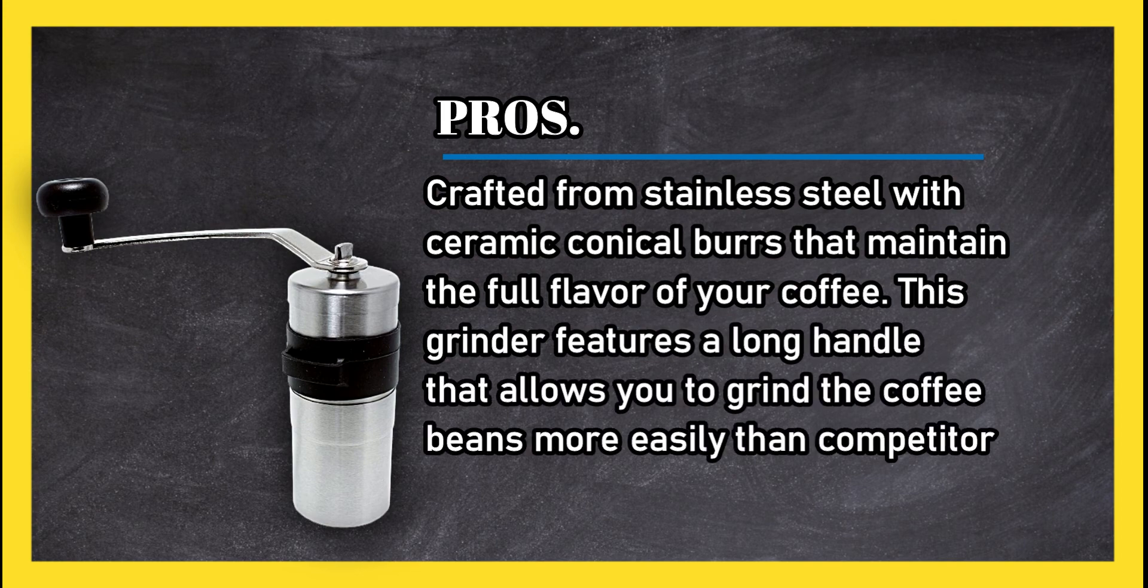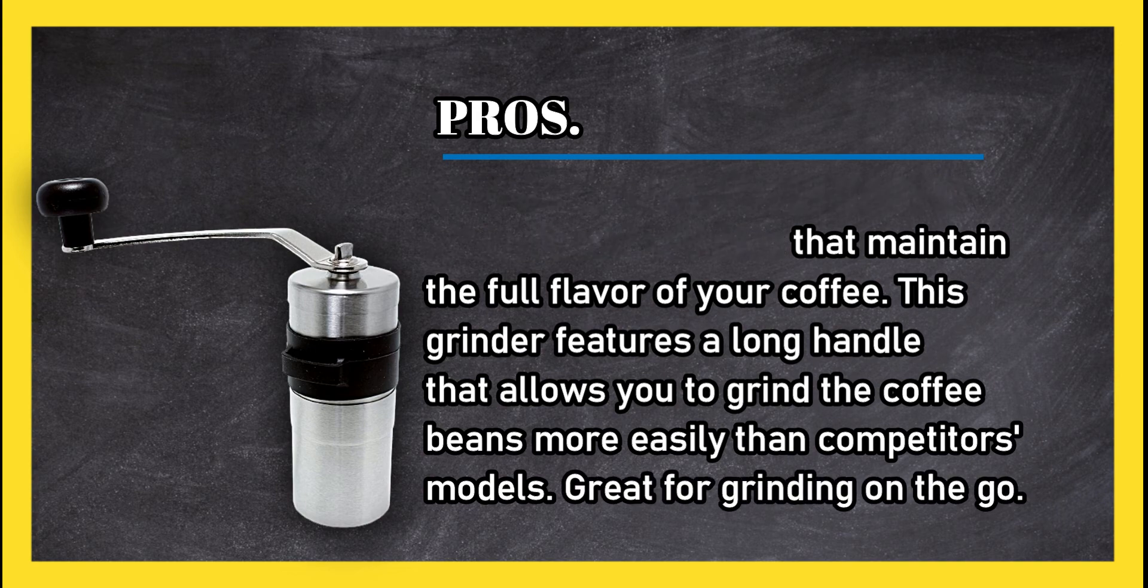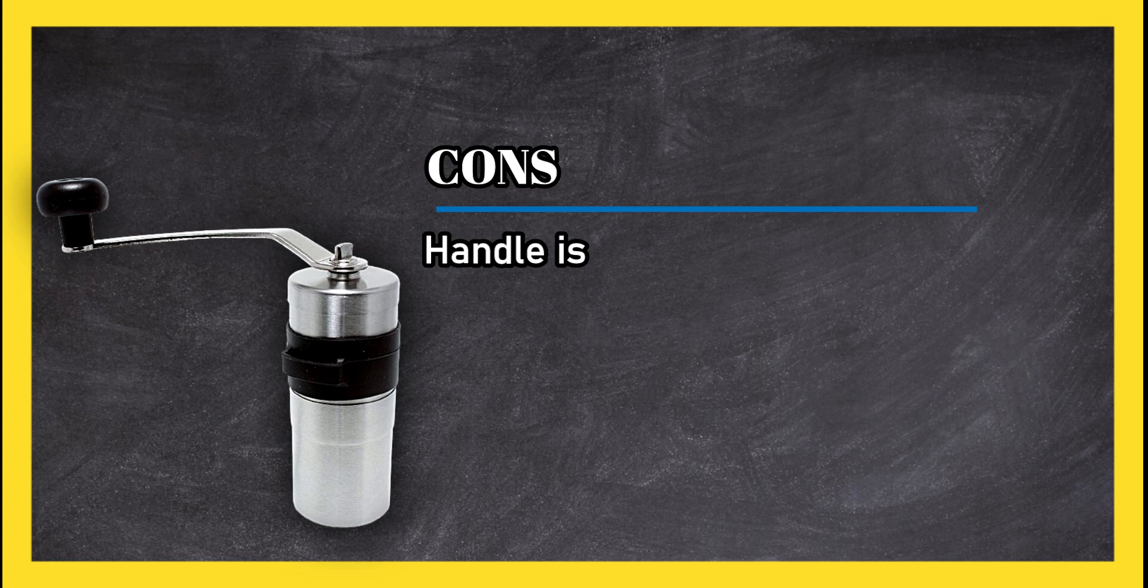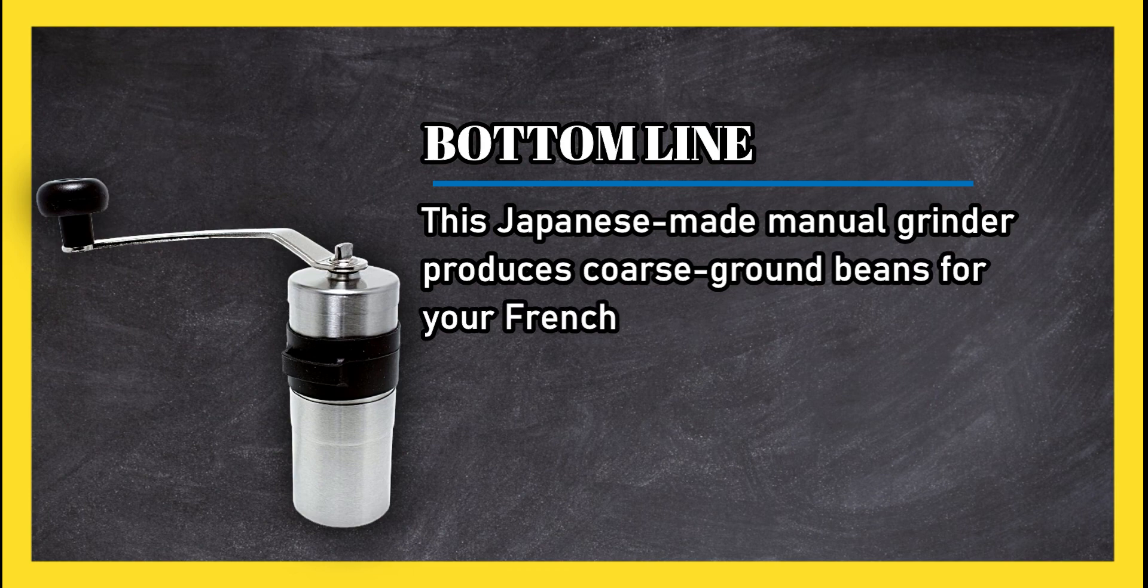Cons: Handle is not directly attached to the grinder and can come off. Bottom line: This Japanese made manual grinder produces coarse ground beans for your French press as well as finely ground espresso.